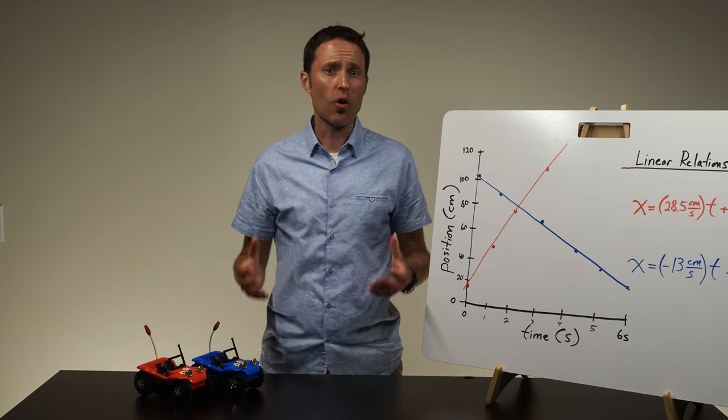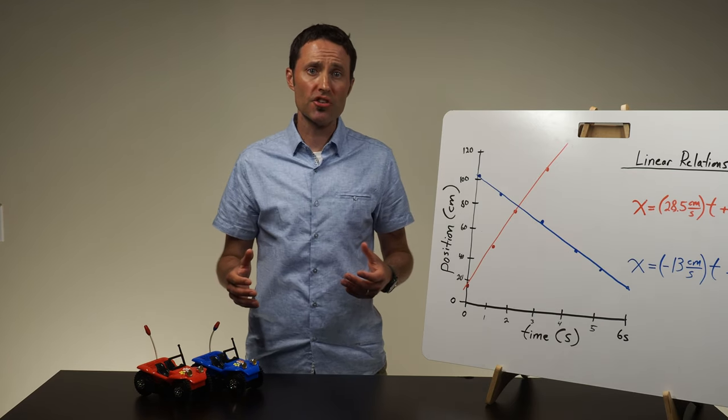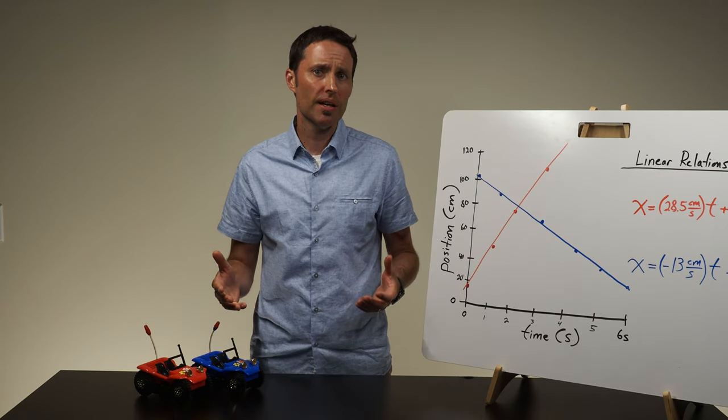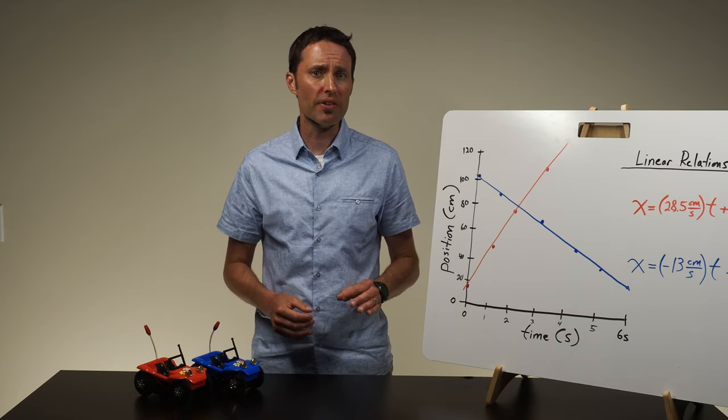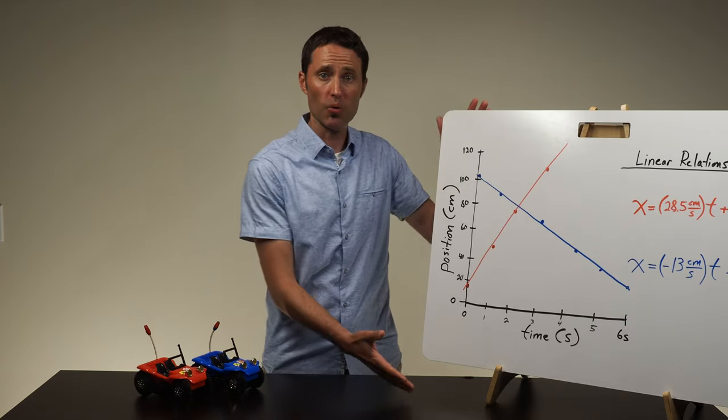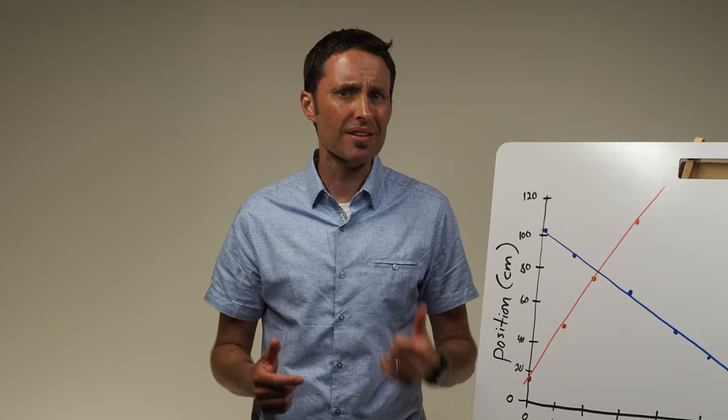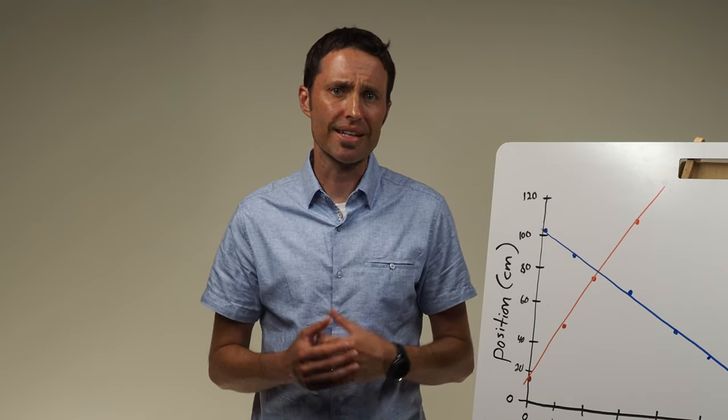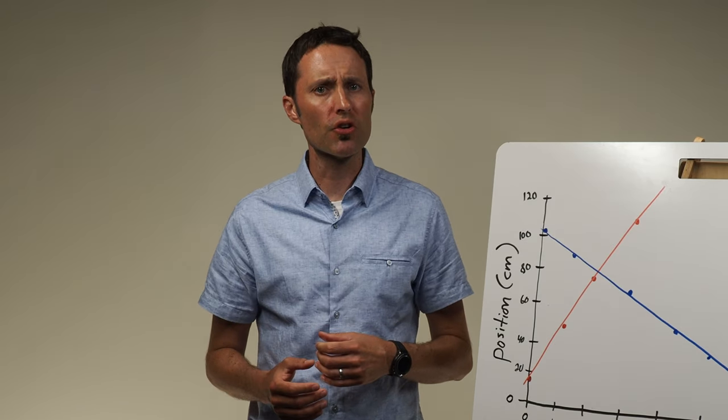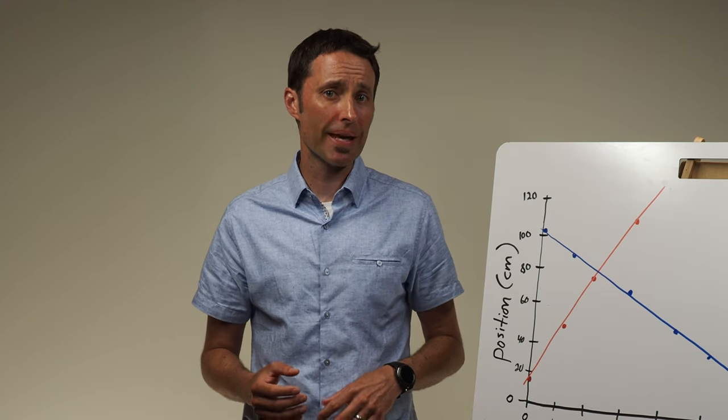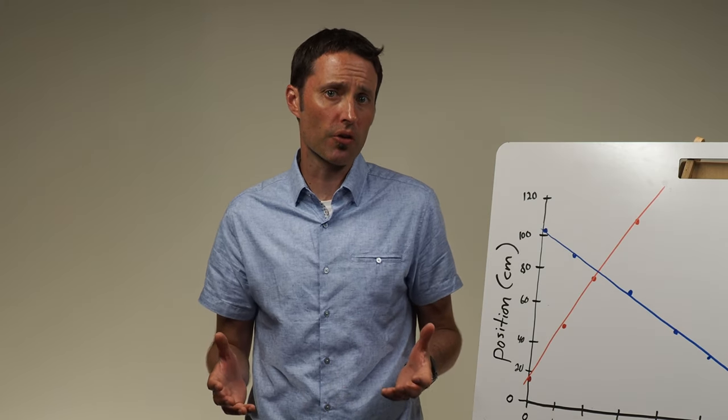To facilitate a whole class conversation about the relationship between the position and time for objects moving at constant speeds, have each lab group record their graph and resulting equation on a large whiteboard. Have the class circle up so that everyone can clearly see the graphs and equations on each whiteboard. Remember that your goal is to help facilitate a conversation that allows your students to make connections and draw conclusions from the graphs and equations.